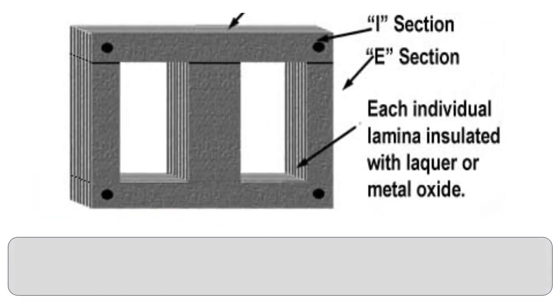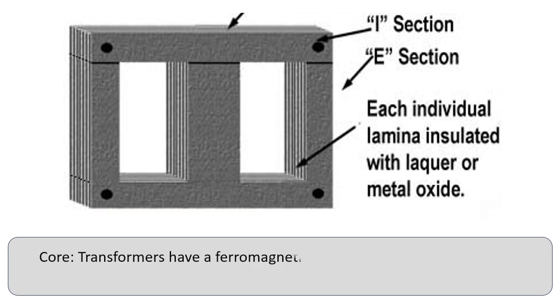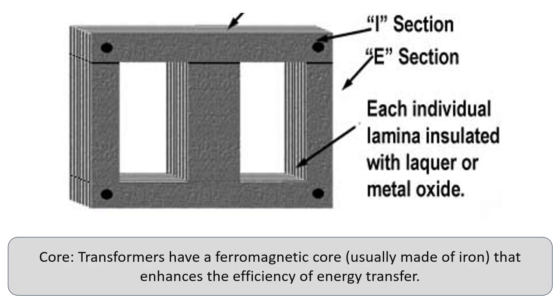Core: Transformers have a ferromagnetic core, usually made of iron, that enhances the efficiency of energy transfer.